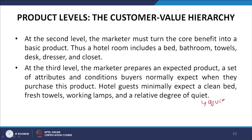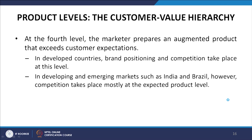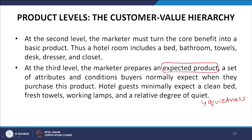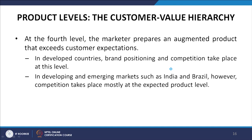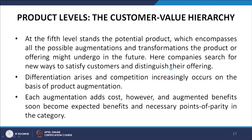At the fourth level, marketers prepare an augmented product that exceeds customer expectations. In developed countries, brand positioning and competition take place at this level. In developing and emerging markets such as India and Brazil, competition takes place mostly at the expected product level. At the fifth level stands the potential product, which encompasses all the possible augmentations and transformations the product or offering might undergo in the future. Here companies search for new ways to satisfy customers and distinguish their offerings.